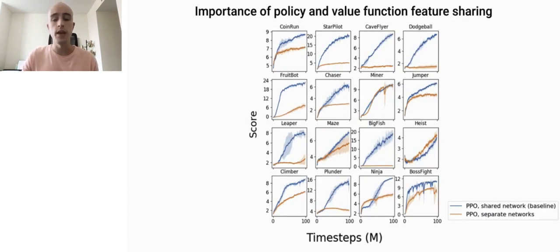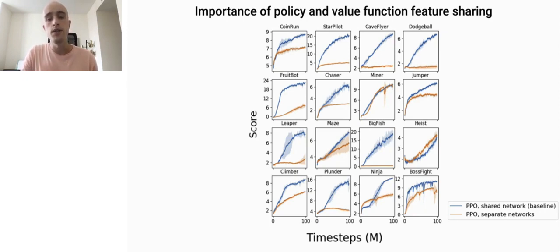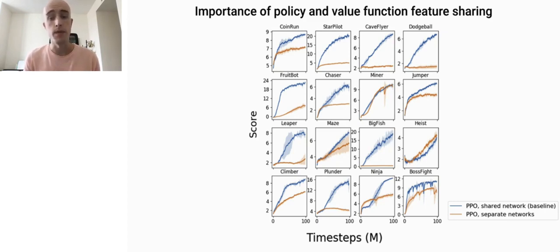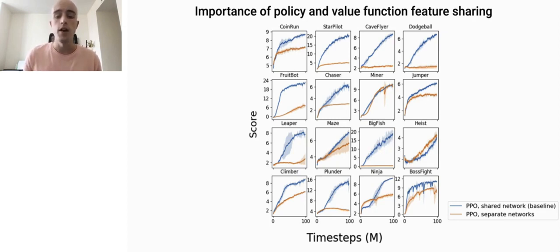It might seem like the choice to use separate networks or a shared network is a relatively minor implementation decision. However, in practice, this simple decision often has really big consequences. Here we show a comparison between two implementations of PPO trained on the 16 procedurally generated environments from ProcGen Benchmark. Procedural generation makes these environments highly diverse, and they're ideal for evaluating RL agents. We'll be using ProcGen Benchmark for evaluation throughout this work.